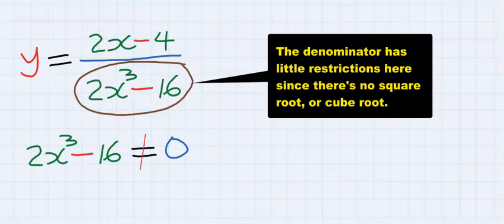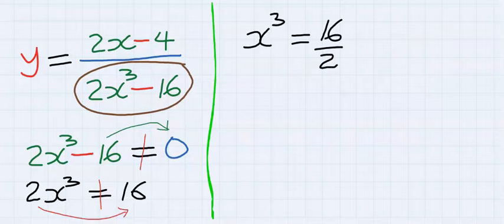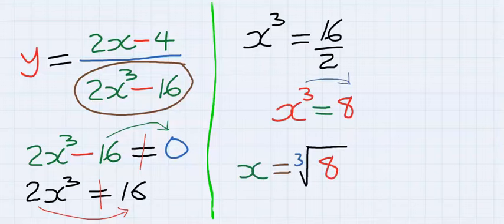Solving this denominator, take minus 16 across, and you are going to have 16. And when you take 2 across, it will divide 16. And the cube will move across, and become cube root.